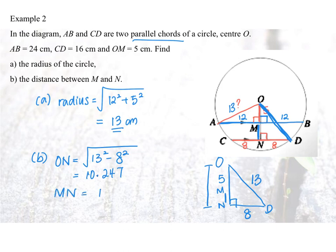And now to find NM, I just need to subtract 5. And that gives me the answer, 5.247. Rounding off to 3 significant figures, 5.25cm. Have you gotten the answer?